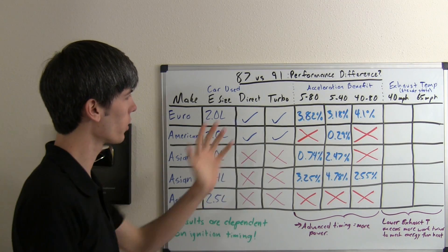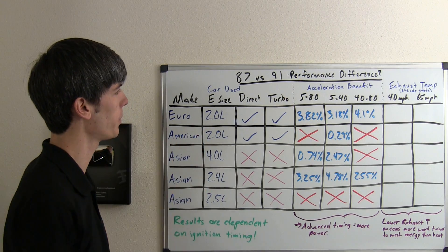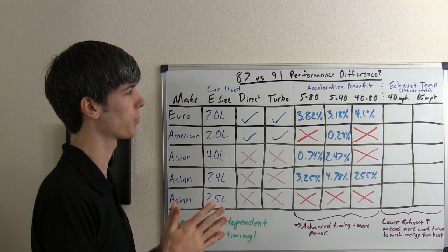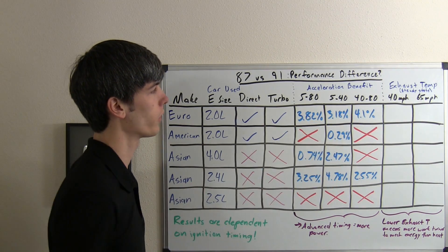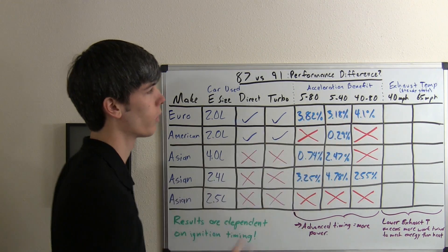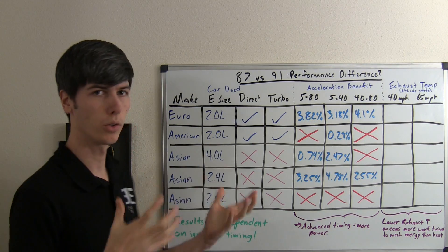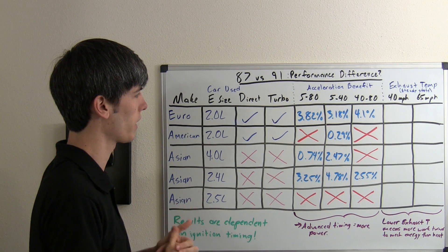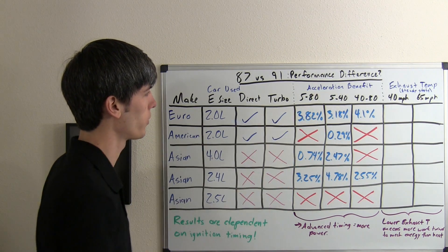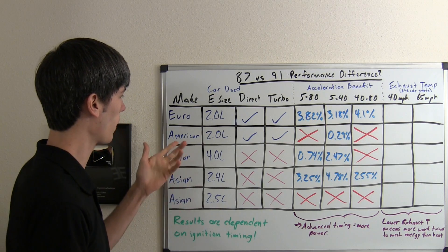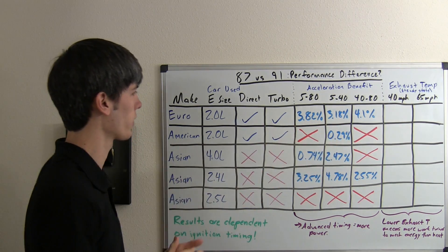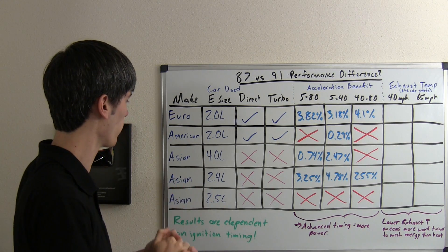Here we have the results for the acceleration testing. The European, as you can see, 3.82% faster overall from 5 to 80 miles per hour: 3.18% from 5 to 40 and 4.1% from 40 to 80. Using premium fuel in this vehicle provides a significant performance gain, nearly 4% in acceleration, which is pretty incredible. For the American car, nothing really happened—no changes in acceleration, maybe even a little bit worse.